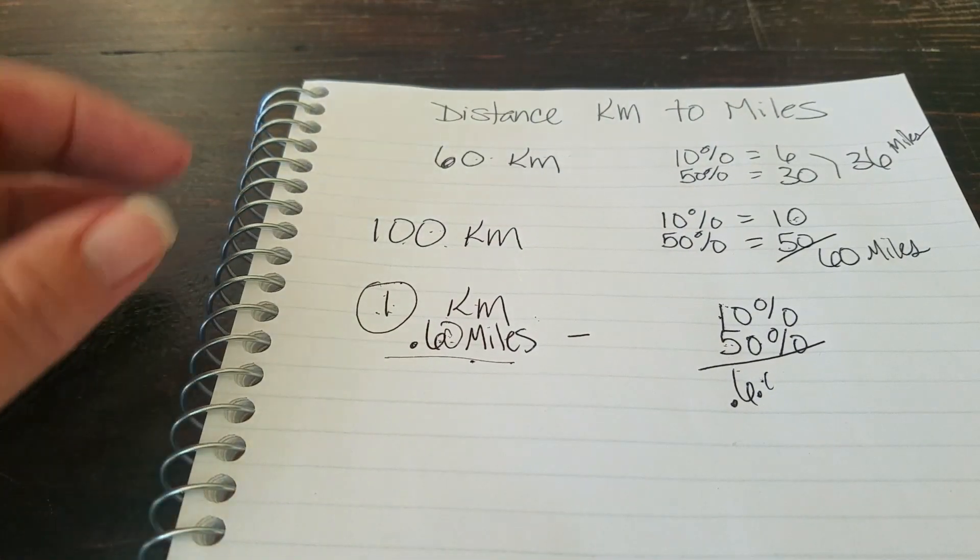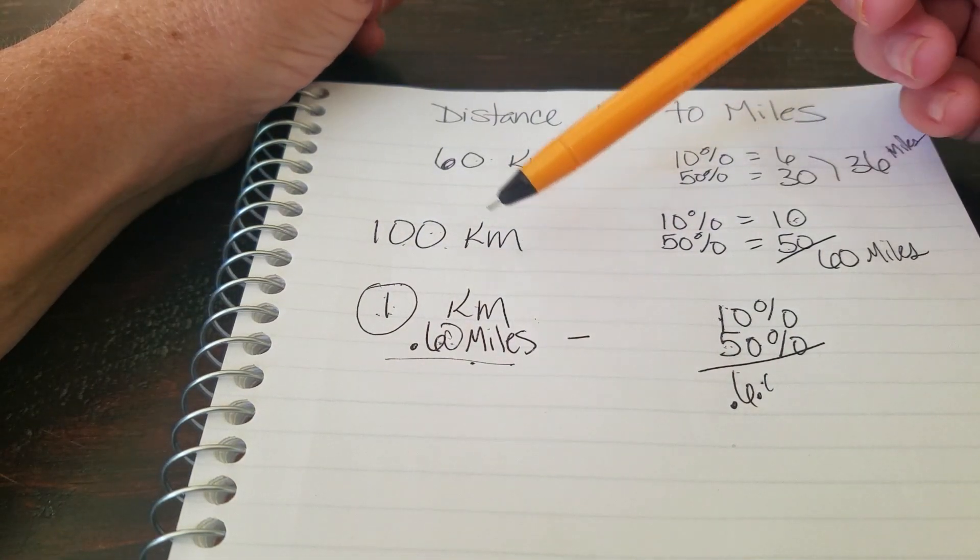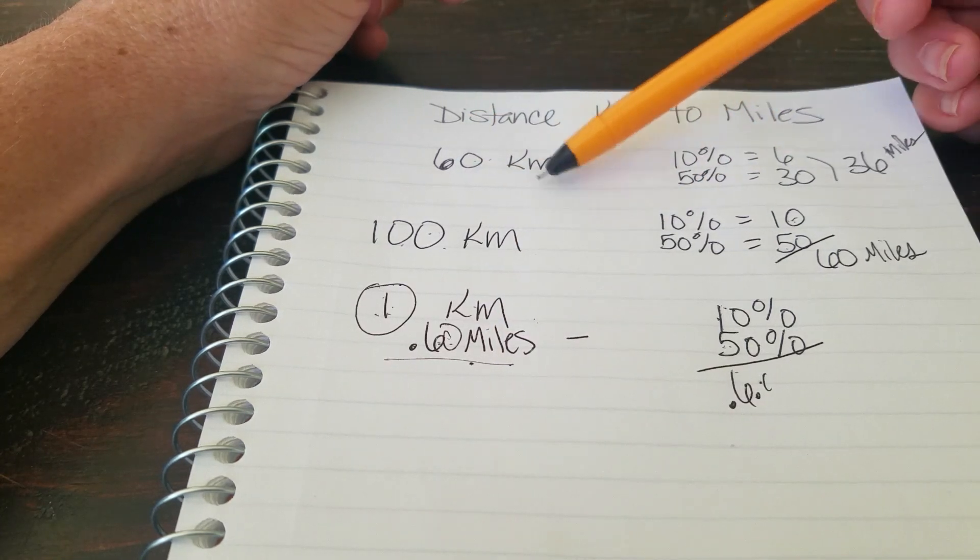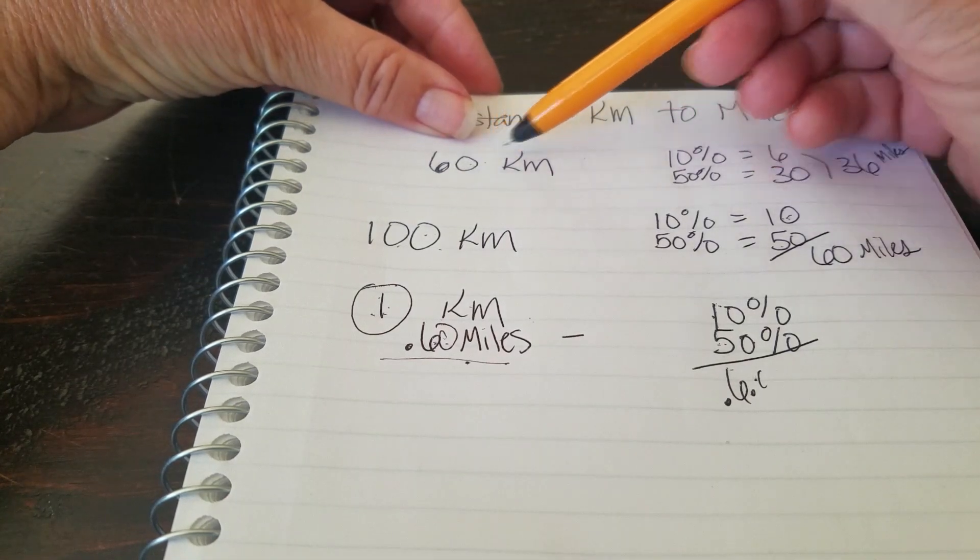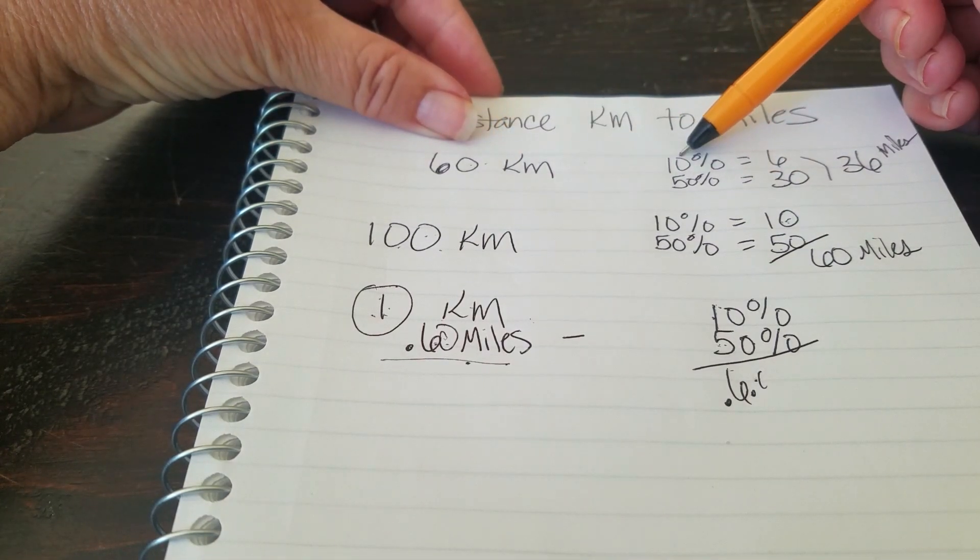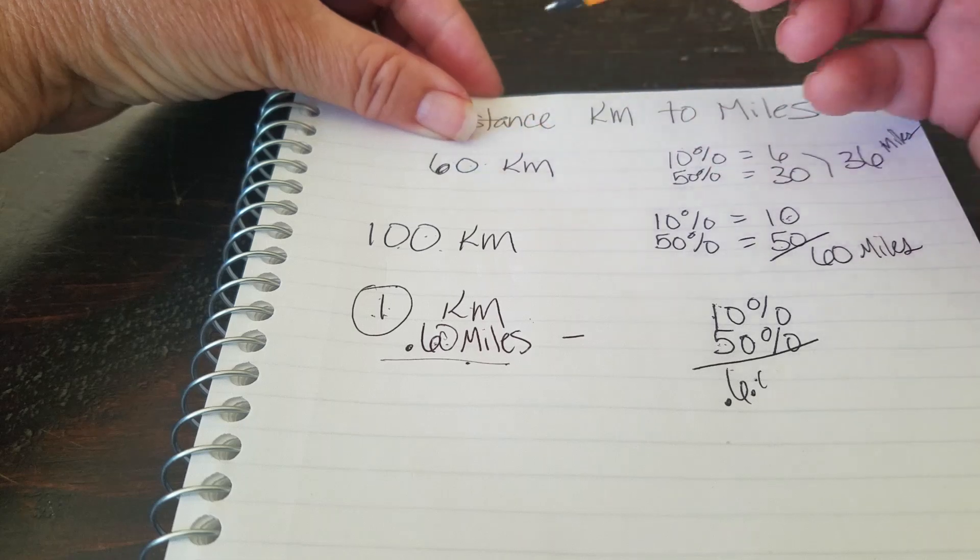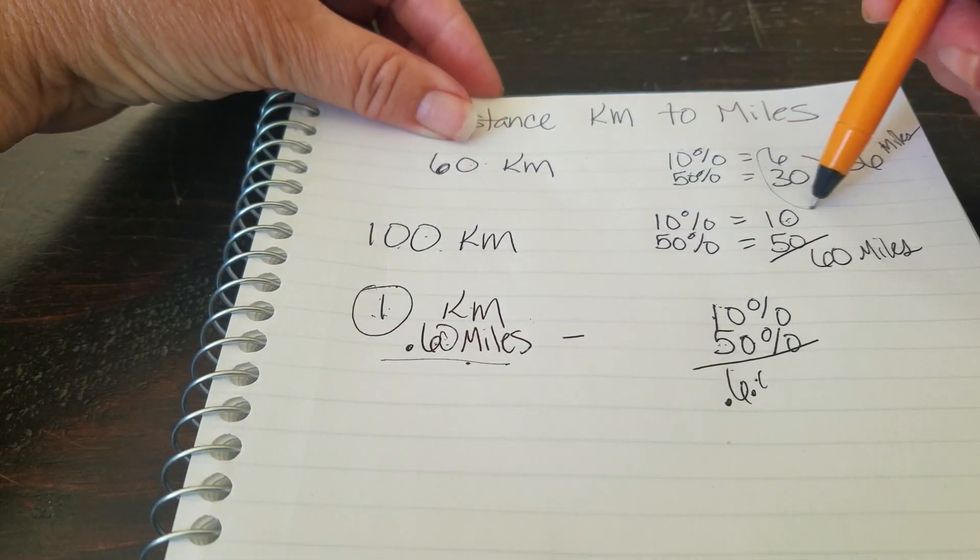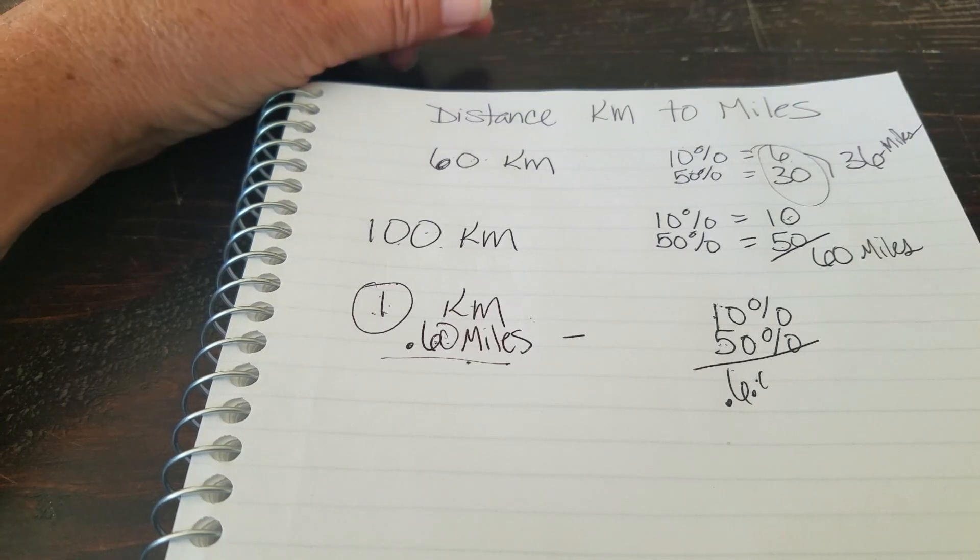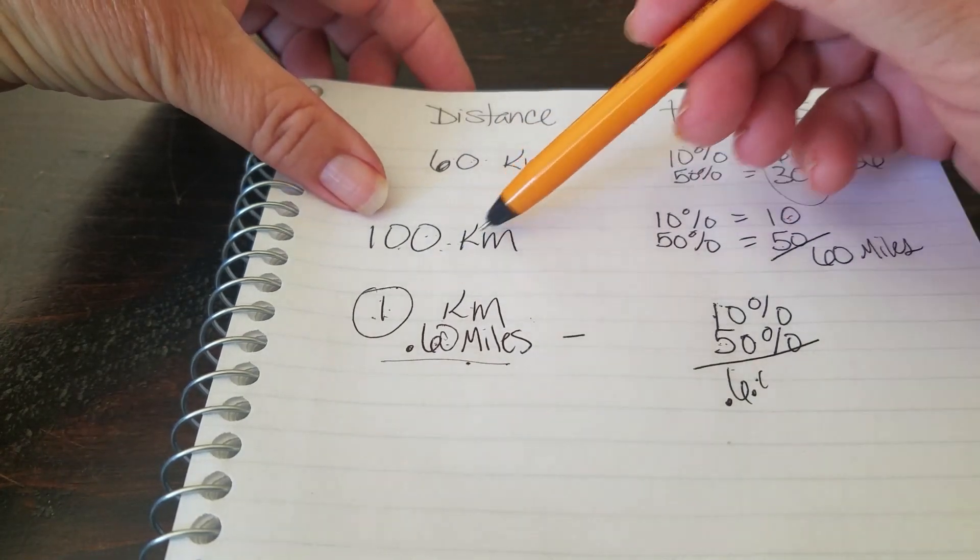You get it after a while, you can do it in your head, especially if you've got these nice round numbers. You can always pull out a calculator to check it, but figure out what 10% of the total is and figure out half the total, add those two together and you'll come up with the mileage.